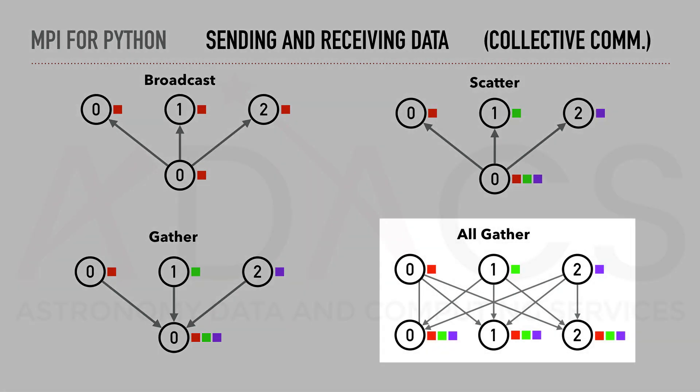An extension to gather is the MPI all gather, where the gathering process is done for all processes. In this mode, each process ends up with the overall information.